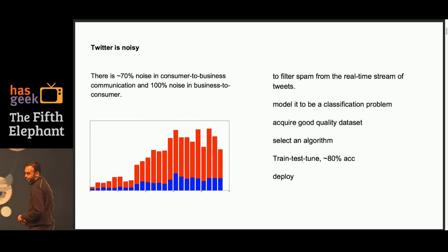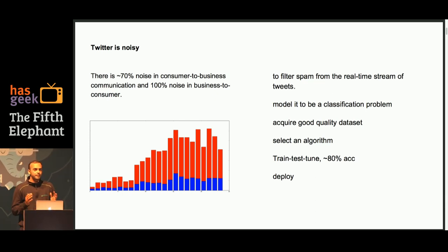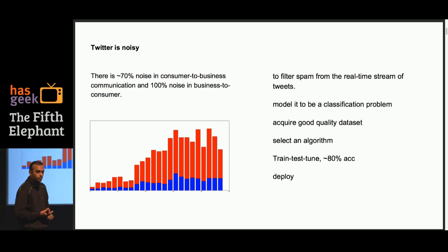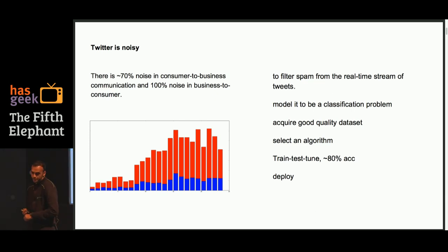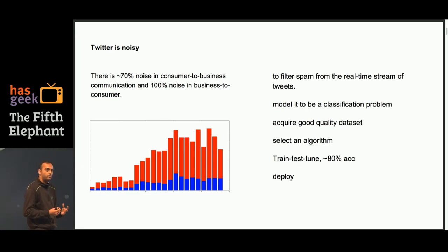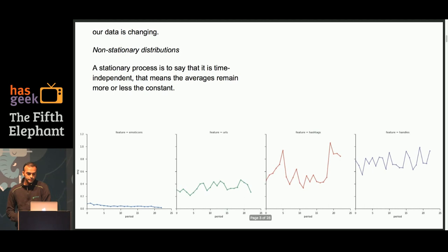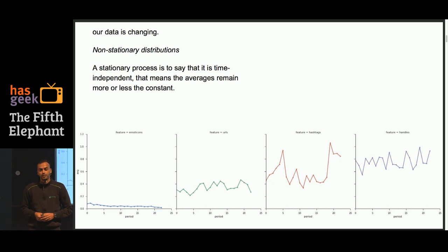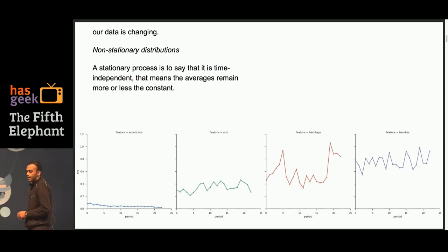Identifying spam can be modeled as a classification problem. You set up a classification setting, acquire a good quality dataset, select a learning algorithm, then train, test, and tune to reach benchmark accuracies — going beyond 80% — and then deploy into production systems. However, as you go ahead, you would see that the accuracies of what you had built over time would start deteriorating; performance begins degrading as time passes.